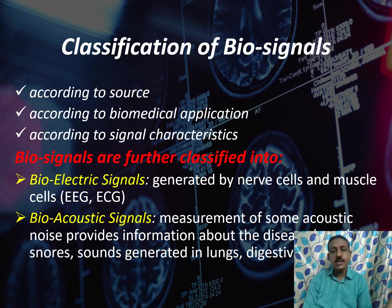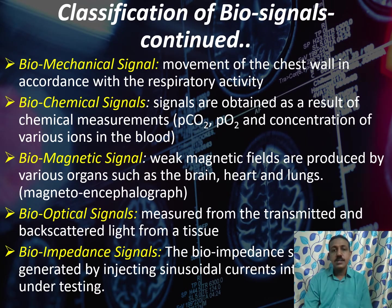Next is bioacoustic signals. Some acoustic noises are produced from our human body and this acoustic noise is measured and it provides information about some diseases such as snoring sound, the sound generated from the lungs, digestive tract, etc. Next is biomechanical signals. Due to the movement of the chest walls, in accordance with the respiratory activity, the biomechanical signals are produced.